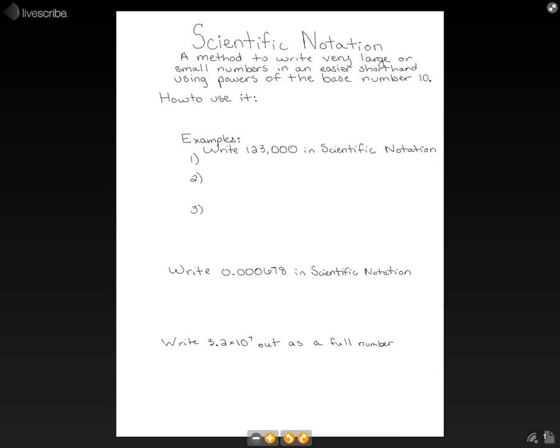Scientific Notation. Scientific Notation is a method to write very large or small numbers in an easier shorthand that uses powers of the base number 10. We use it by having the decimal moved until there is one digit in front of it, and then the corresponding power of 10 is multiplied on.